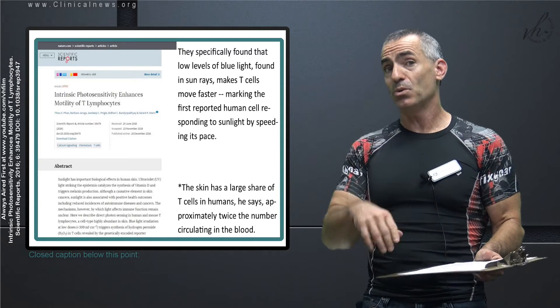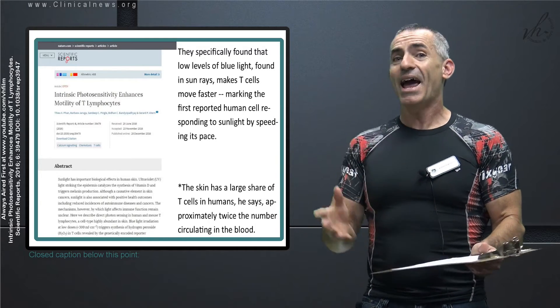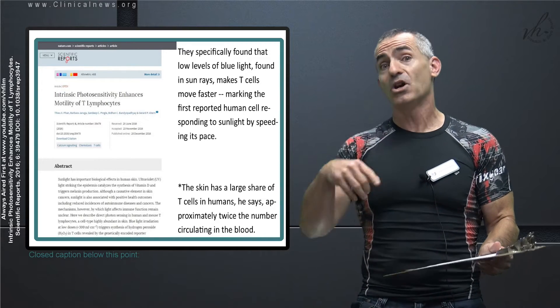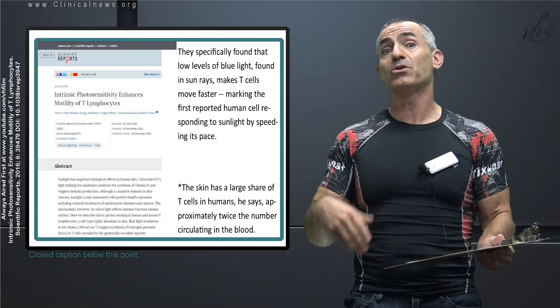So keep in mind also, to reiterate, the skin has twice as many T cells as normally found in the blood. However, those T cells when active begin to migrate to the rest of the body.